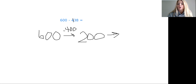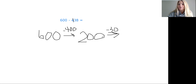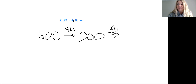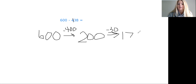Now I'm going to subtract 30 from 200. This is why knowing our ways to make 10 helps us, right? 30 less than 200 — do you know what it is? Can you count back three 10s? 190, 180, 170. Very good. And then I've got eight ones left to subtract, so 170 minus eight.